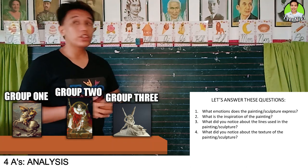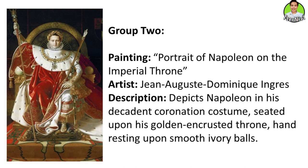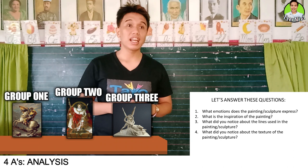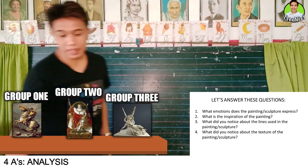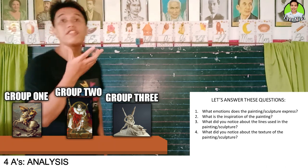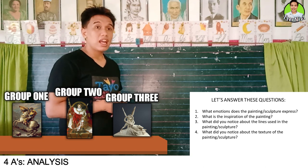Now let's proceed with group two. Their painting is 'The Portrait of Napoleon on the Imperial Throne' by the artist Jean-Auguste-Dominique Ingres. It depicts Napoleon in his decadent coronation costume seated upon his golden encrusted throne, hand resting upon smooth ivory balls. It is indeed very grand. Now group two, who is your reporter? Heidi Sheen. Please come forward. What expressions does the painting give to you? What did it make you feel?